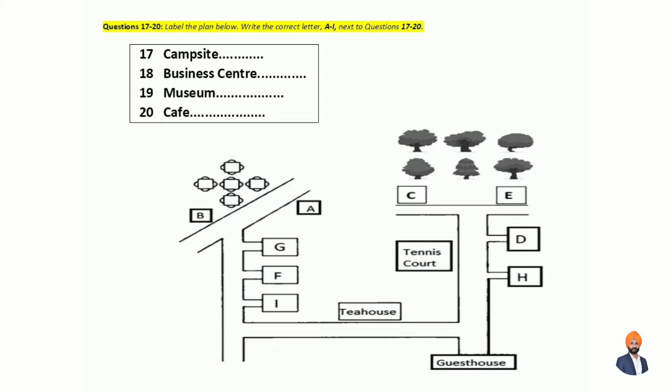During your stay here, you might want to know what there is to do. Let's turn to the plan so I can familiarise you with the layout of the park. Most tourists would choose to stay in our guesthouse located in the southeast corner. It features 63 tastefully appointed guest rooms, many of which offer spectacular views of the park. But for those who want to experience the natural beauty up close, there is also a campsite.